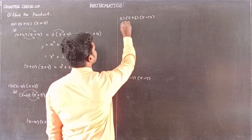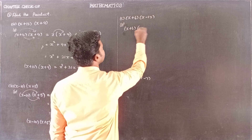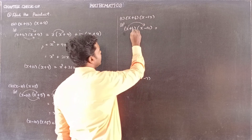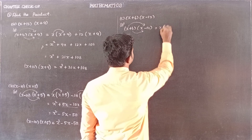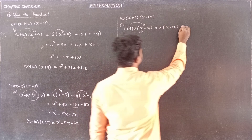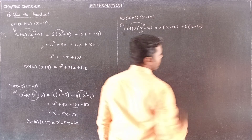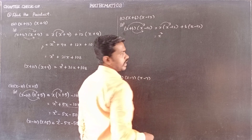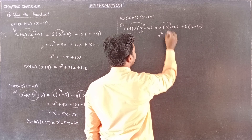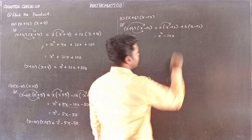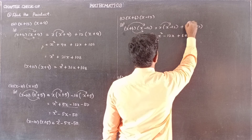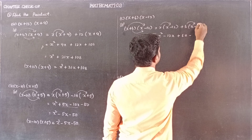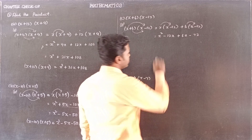Subdivision C: x plus 6 into x minus 12. Distribute: x into x minus 12, plus 6 into x minus 12. So x into x gives x squared, minus 12 into x gives minus 12x; 6 into x gives 6x, and 6 into 12 — 6 twelves are 72.